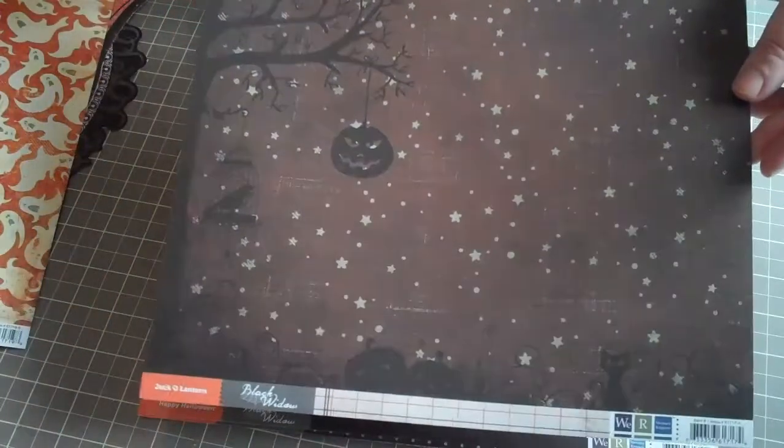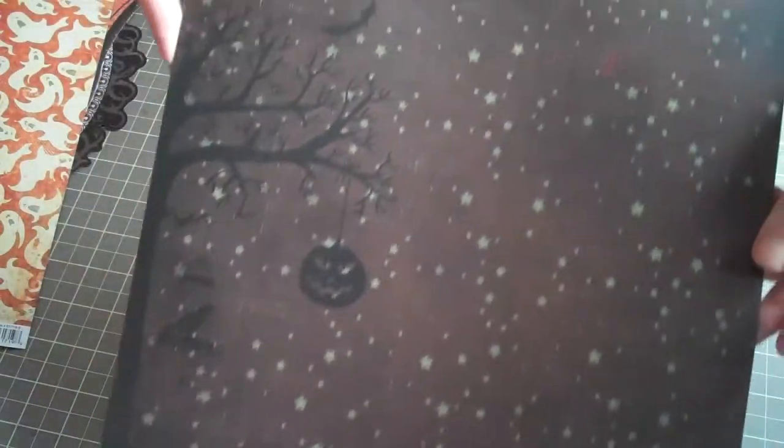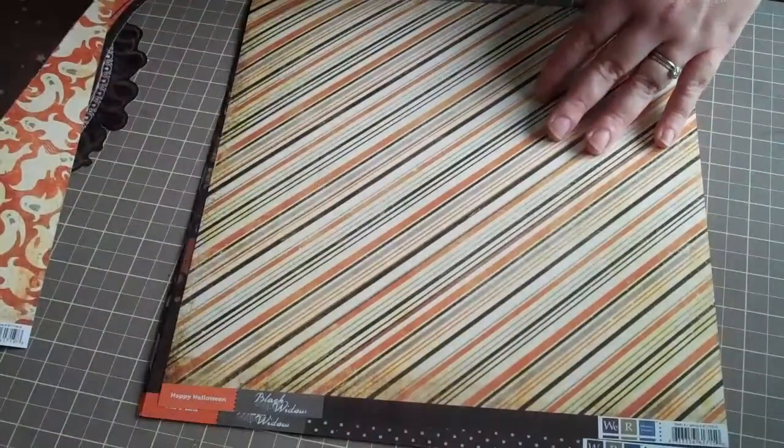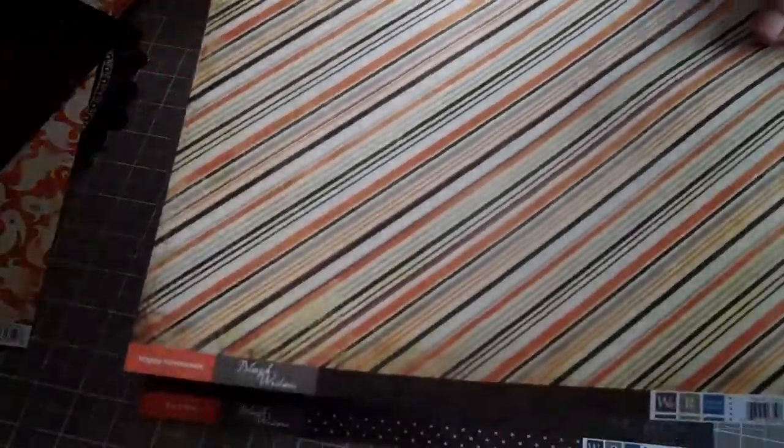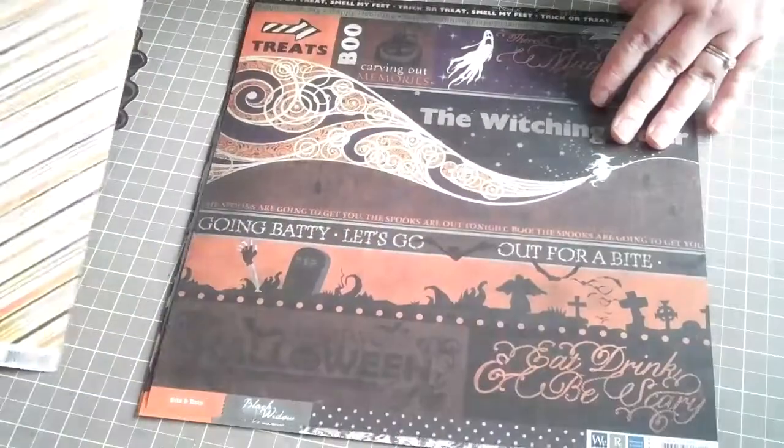Next we have Jack O' Lantern, really cool with the stars and the Jack O' Lantern hanging from the tree. And the back side is a nice ledger paper. Happy Halloween is a vertical stripe, which I really like. And then the back side is the diamonds pattern, which looks really good.